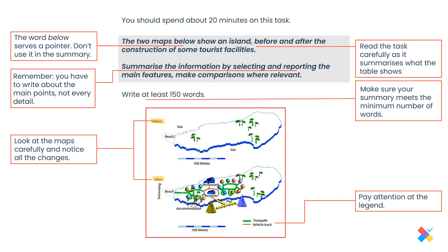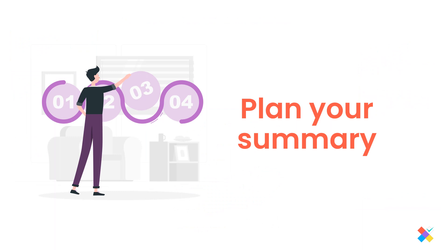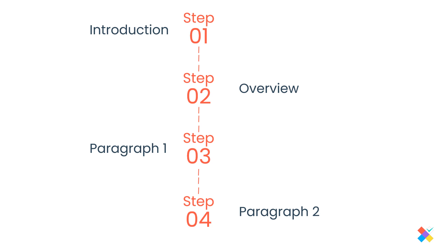Now that you have analyzed everything and written down briefly what you'll write about, let's get to it. To describe two maps, I always advise my students to follow a four-paragraph structure: the introduction, which is paraphrasing the question using synonyms; the second paragraph, the overview, where you should make general statements about the map. You should also ask yourself the following questions to identify the general changes.